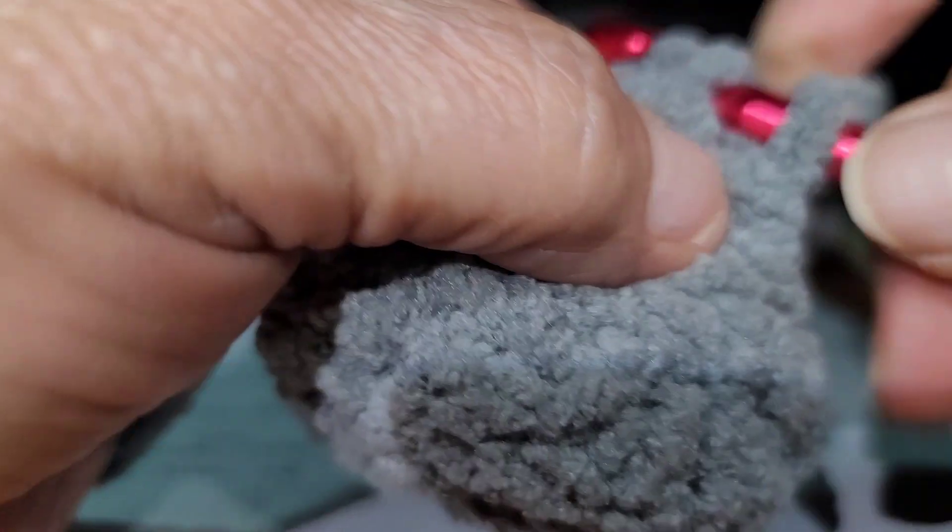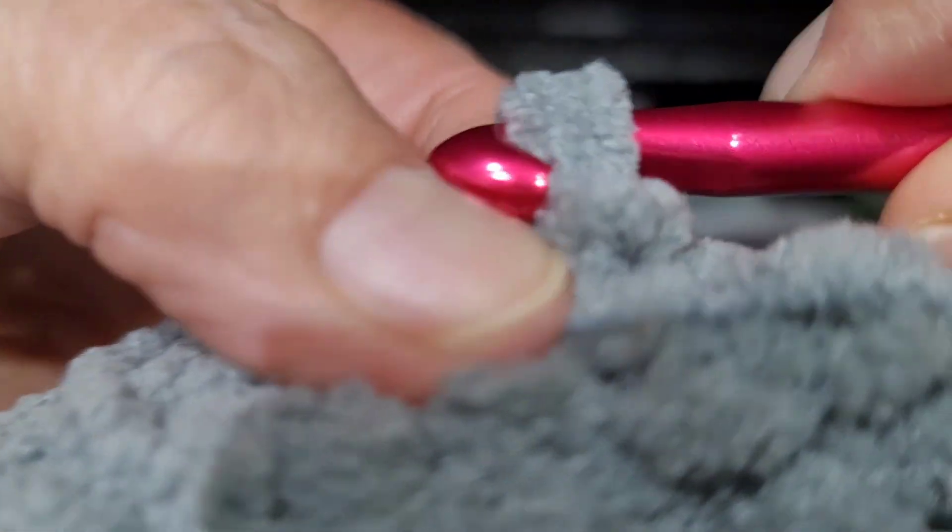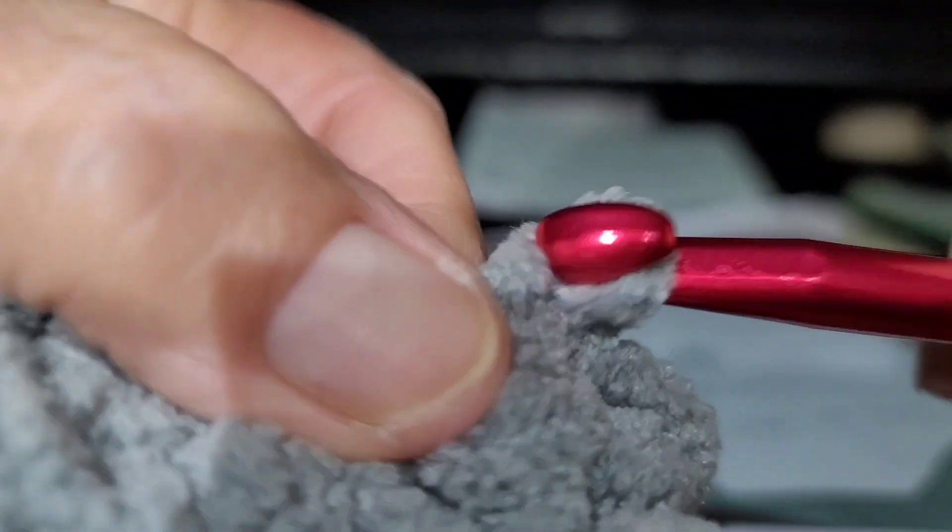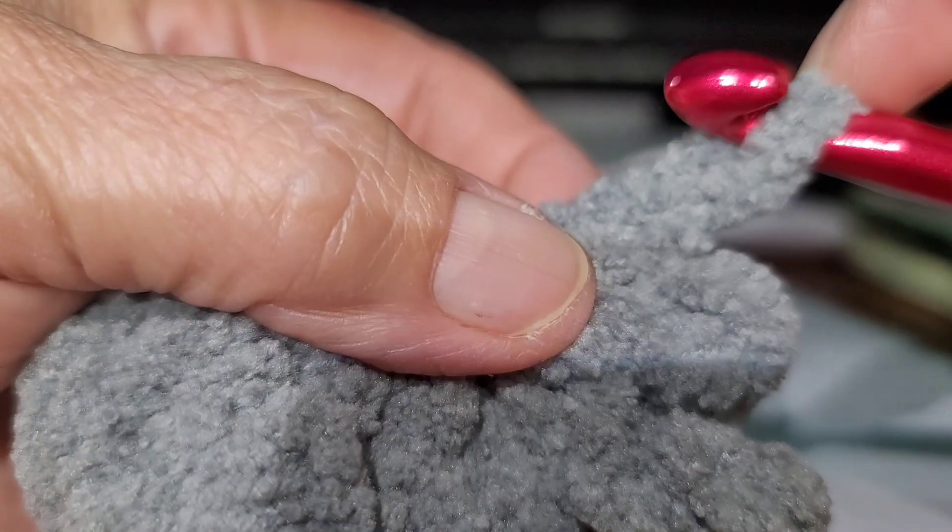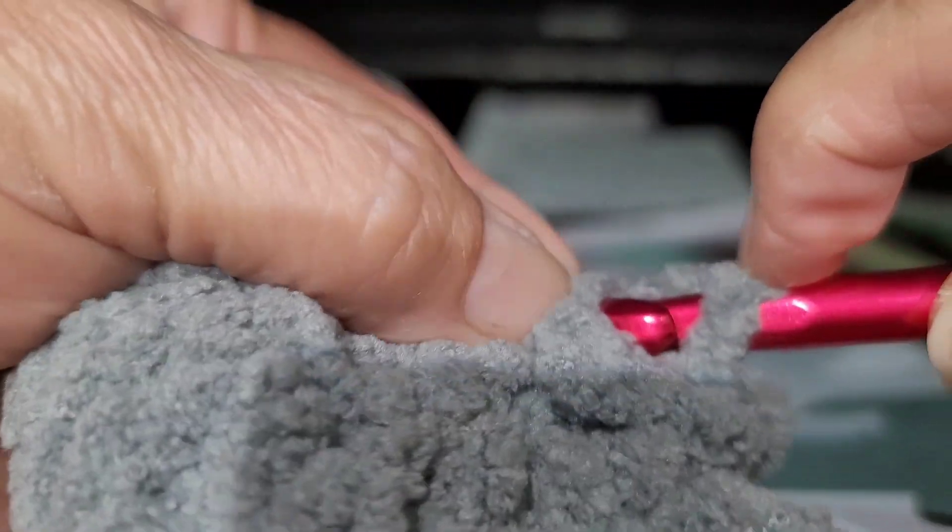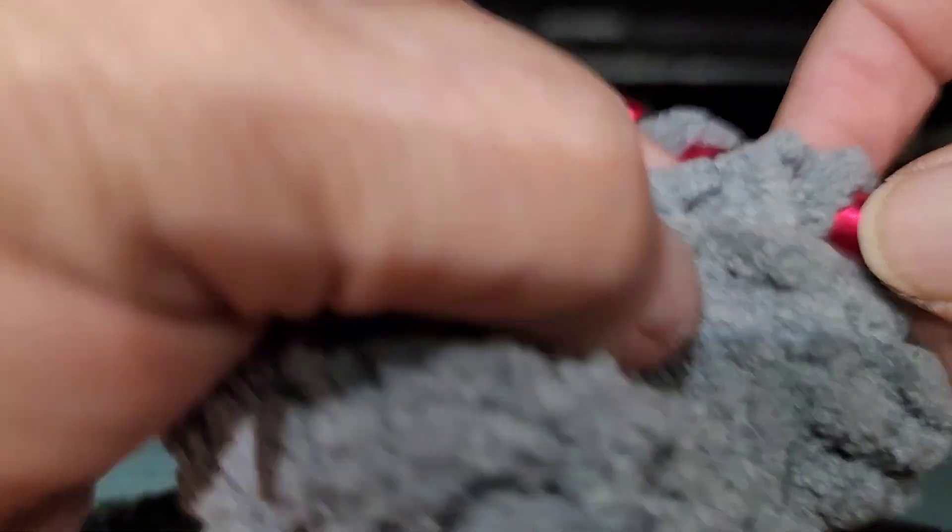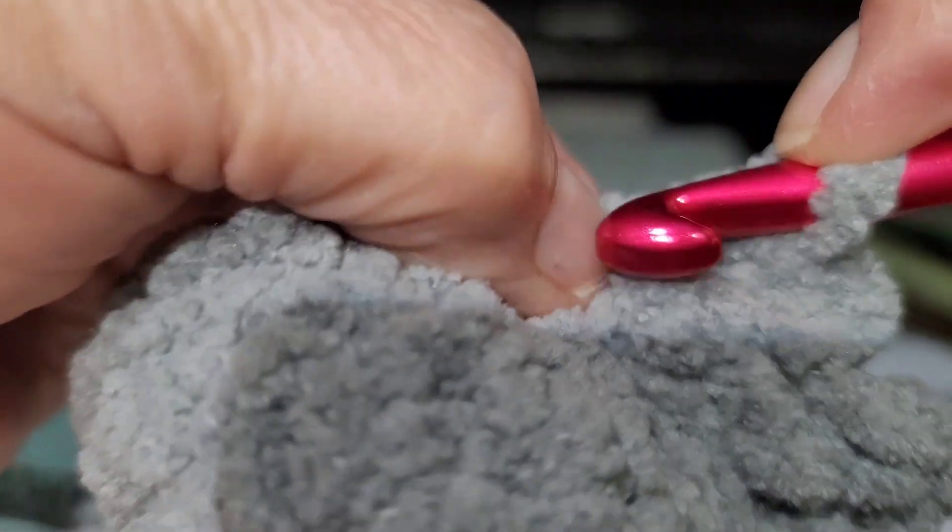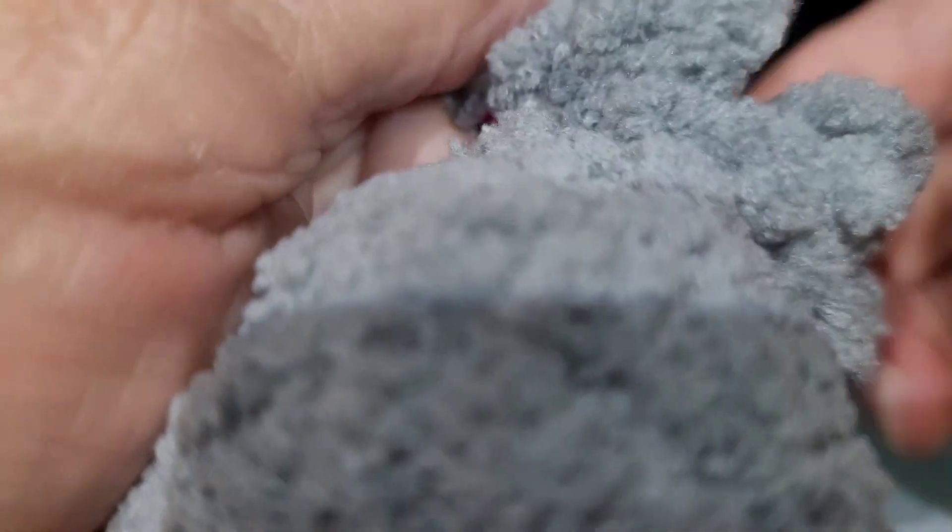Hard for me to find front loops. Slip stitch to the front loop for the next stitch. Chain two, one, two. Go back into your first chain, slip stitch, pulling it right through. Go back to where you started, slip stitch. Making them like little feet, looks like to me, but tentacles.